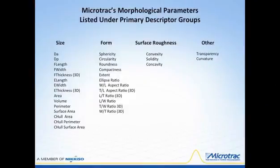This is the set of parameters MicroTrack reports for its Partan 3D Dynamic Image Analyzer product. Rather than go into each in detail, I'll describe in four general terms what they measure. First is size — we give you 15 different size measurements for each particle in various diameters, lengths, widths, thicknesses, and more.